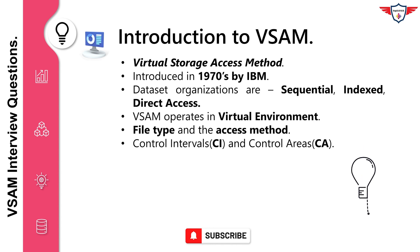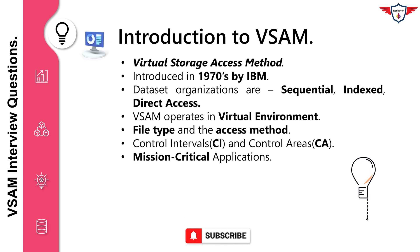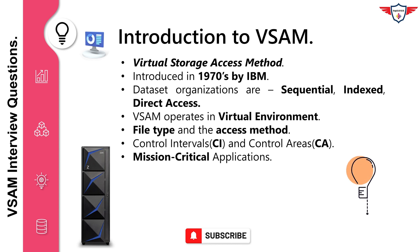VSAM data sets are held in control intervals (CI) and control areas (CA). The size of the CI and CA is normally determined by the access method, and the way in which they are used is not visible to the user. Virtual Storage Access Method can be found on almost every mainframe out there, and yet in some cases it is hardly used.